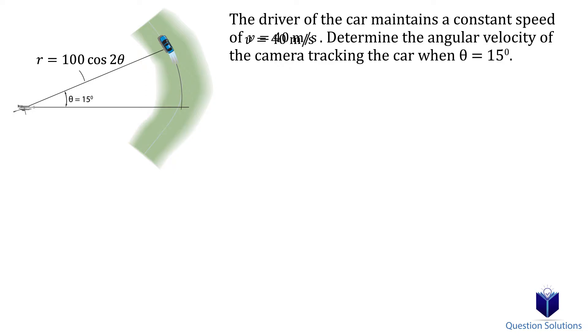We know the car has a constant speed of 40 meters per second. We also know the equation for position.